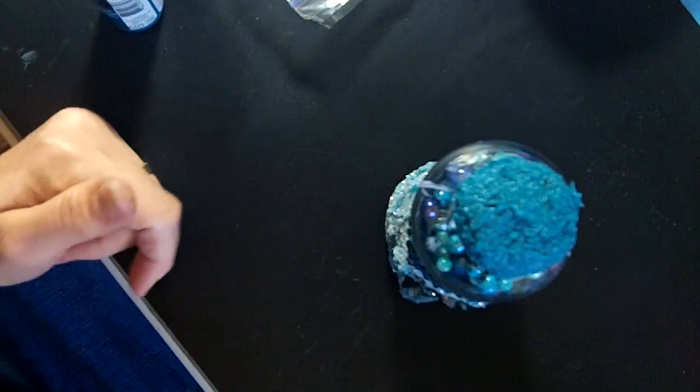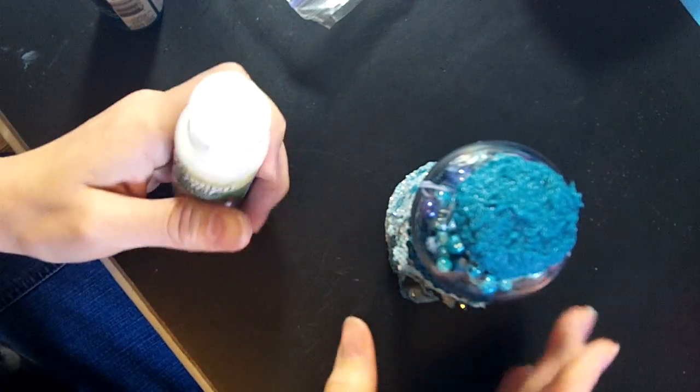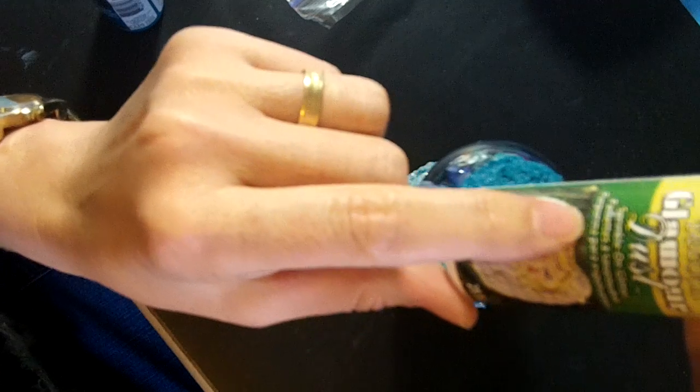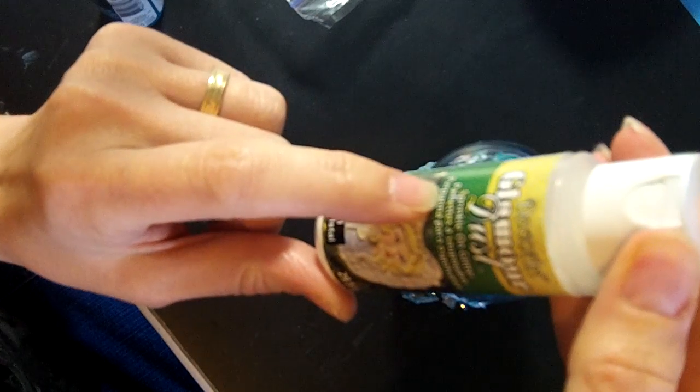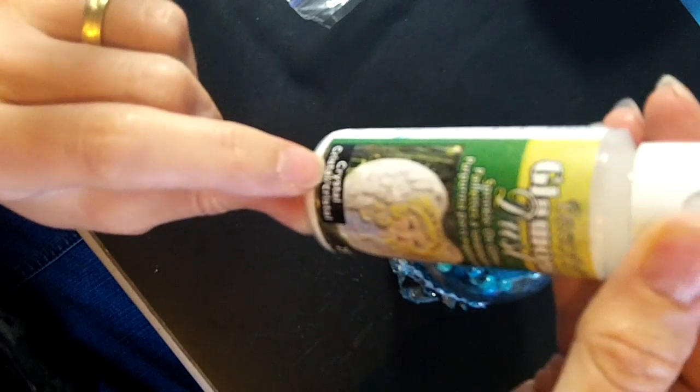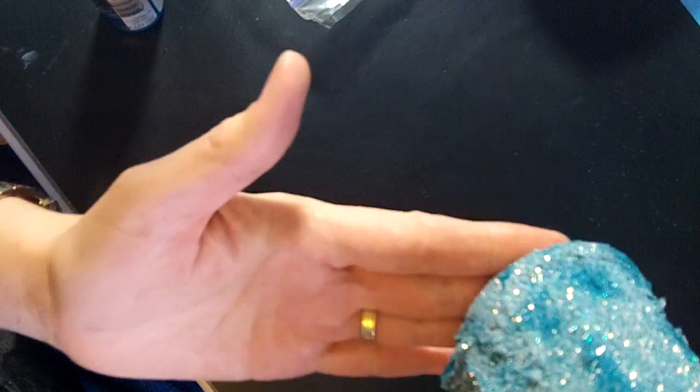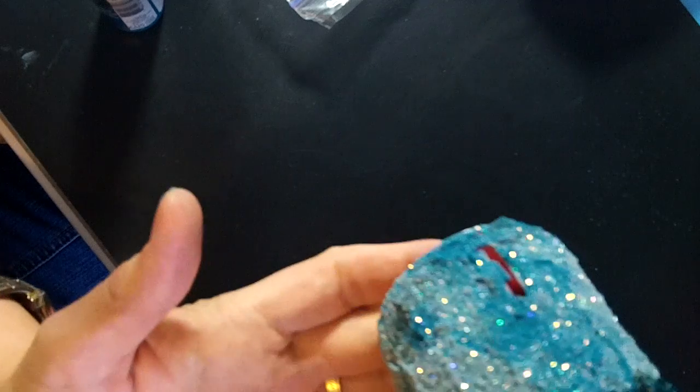Then when I got that all done, I took Deco Art Glamour Dust, which is a sprinkle-on glitter in crystal that I got from the Deco Arts Helping Artists program, and I sprinkled it all over the bottom of my little gumball machine.